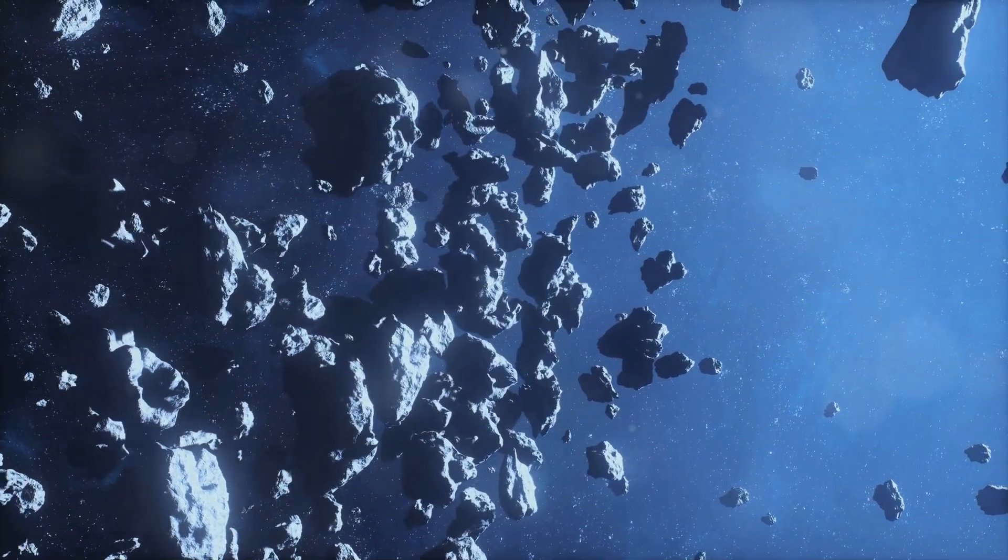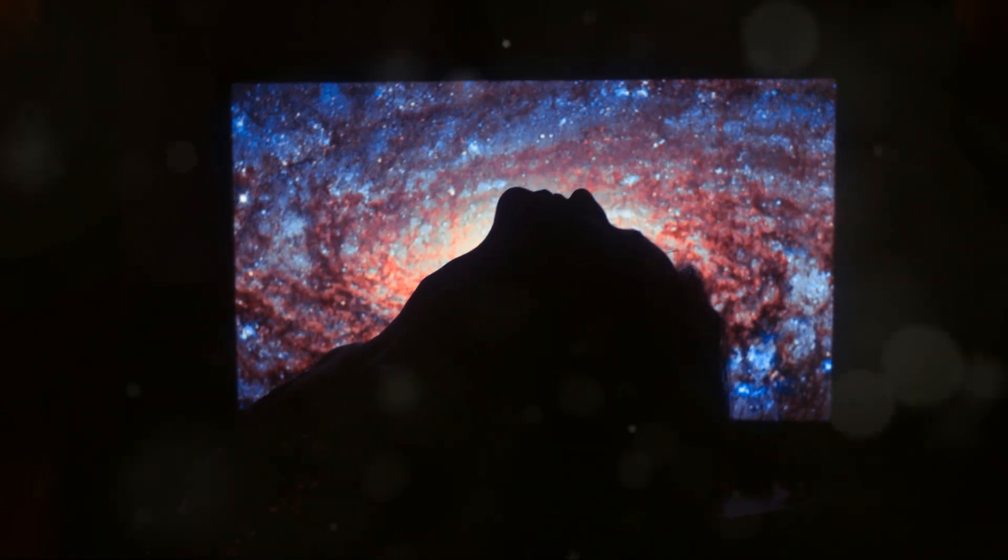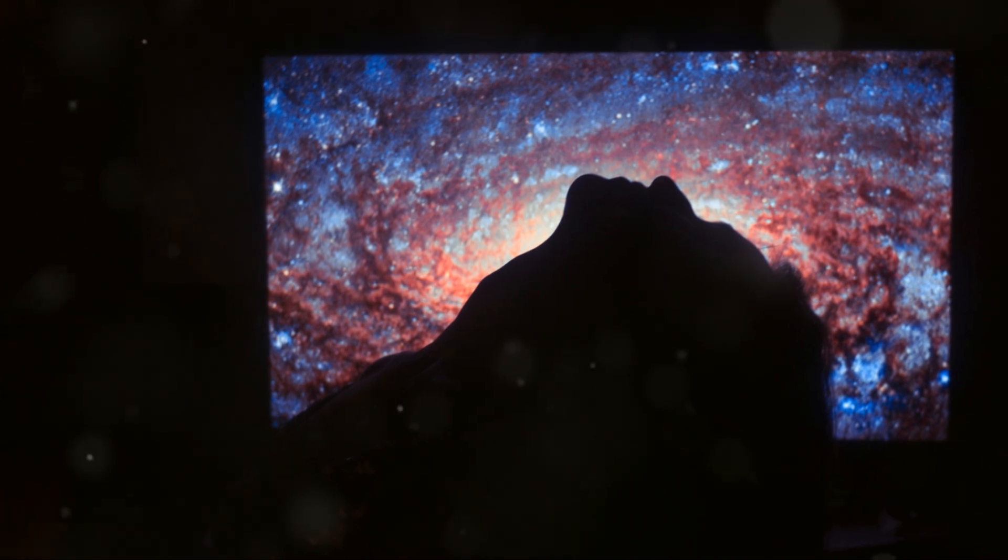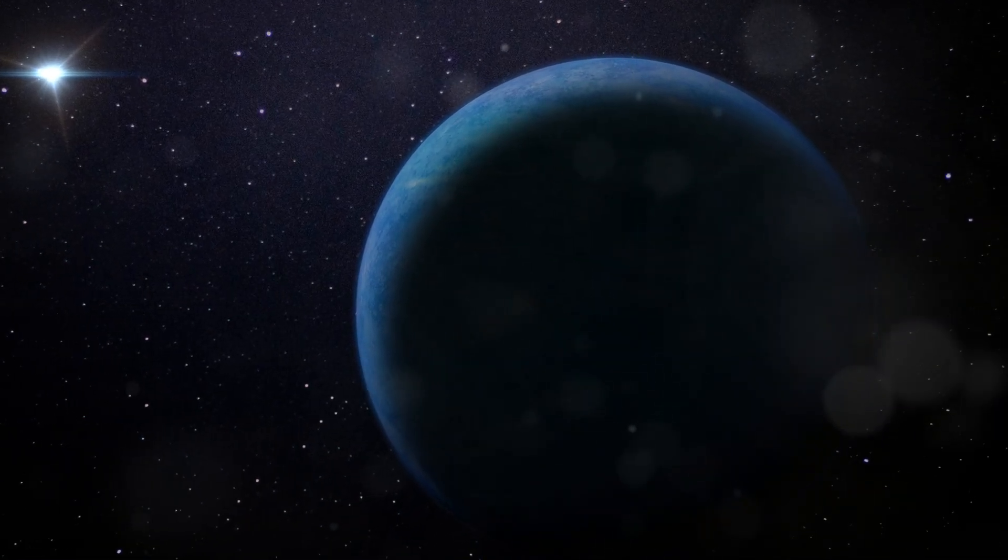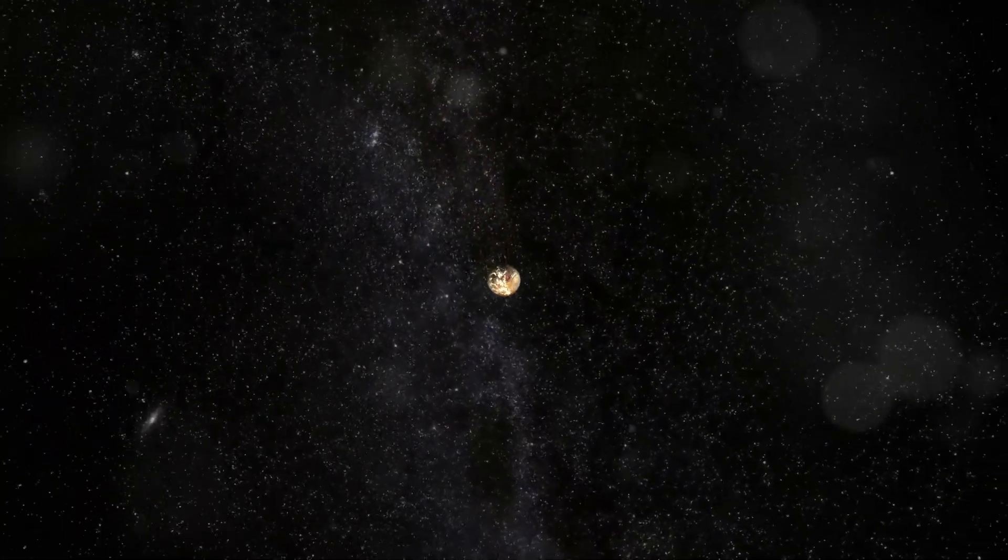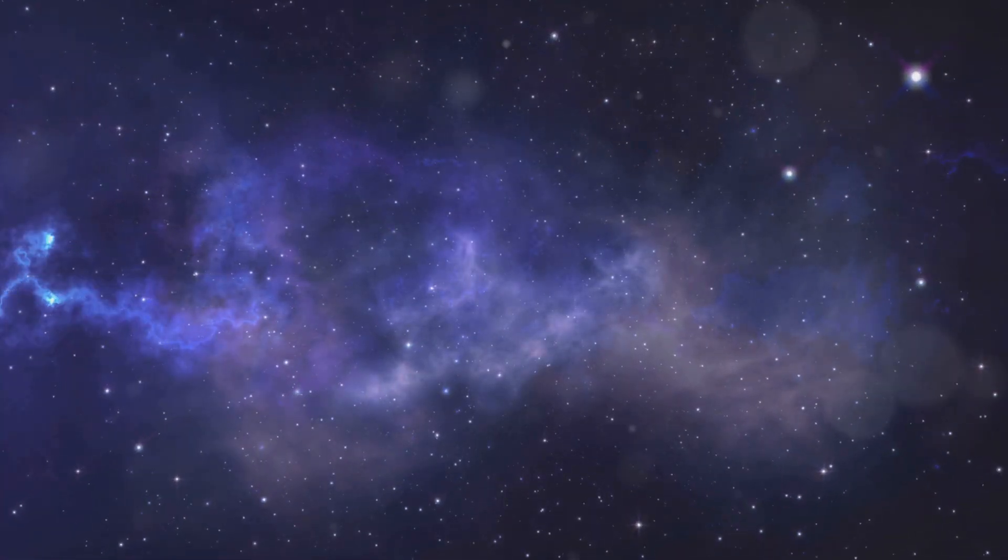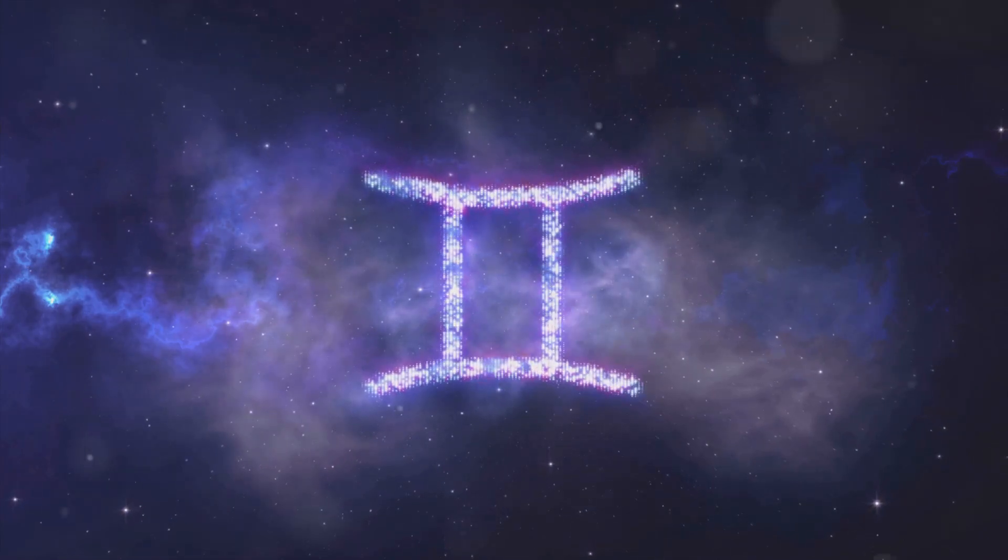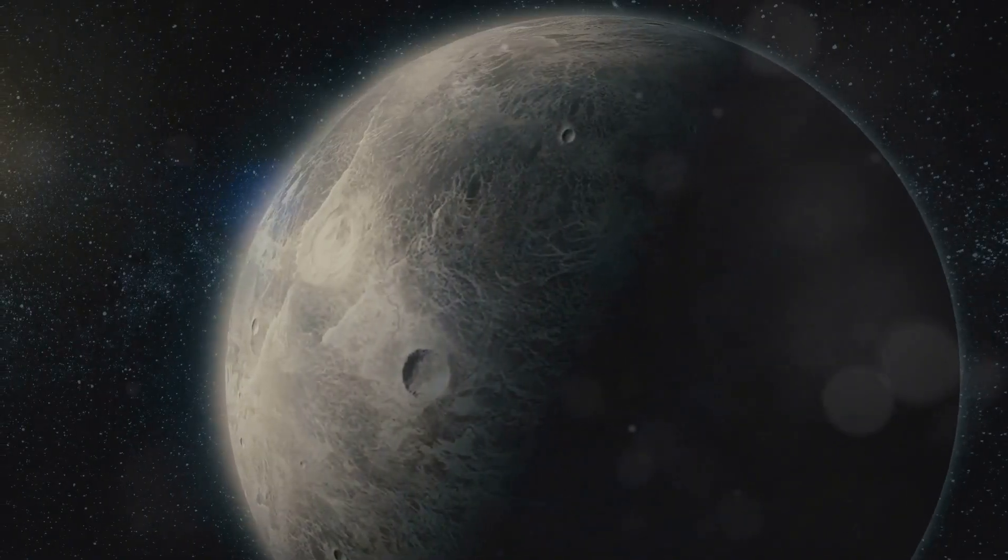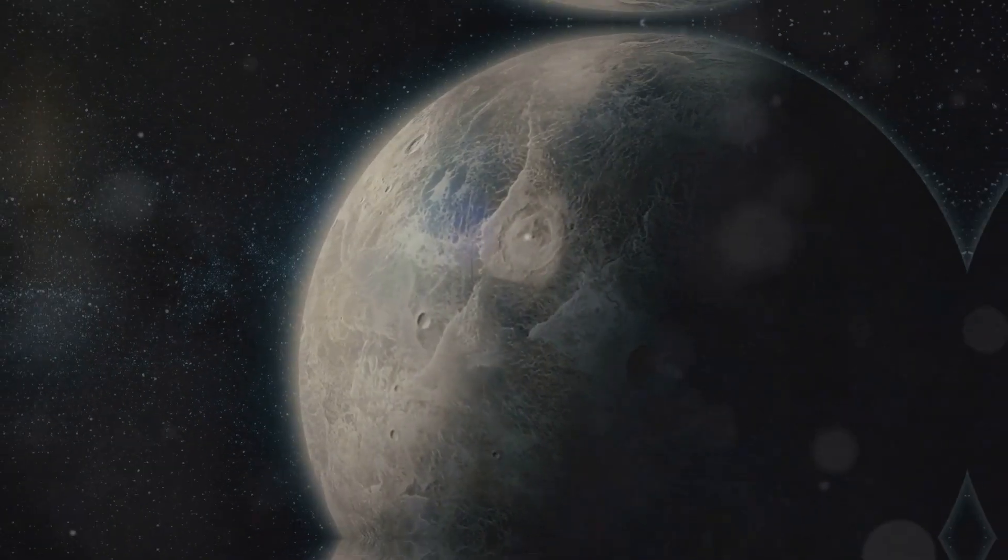a boundary that defies our understanding of the solar system's formation. Why does this abrupt edge exist? Some scientists suggest the influence of a distant unseen massive object, a planet 9, lurking far beyond our current reach. Others propose that the early solar system's formation swept these objects away. Yet despite these theories, the true nature of the Kuiper Cliff remains one of the solar system's most elusive mysteries.